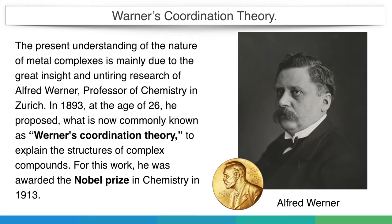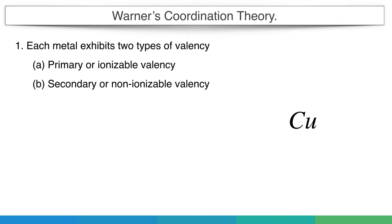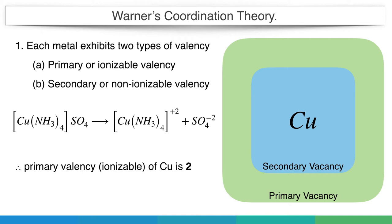Warner's Theory includes the following postulates. First, each metal exhibits two types of valencies: primary or ionizable valency, and secondary or non-ionizable valency. For example, tetra-amino-copper-sulfate on ionization produces tetra-amino-copper plus 2 and sulfate minus 2 ions.